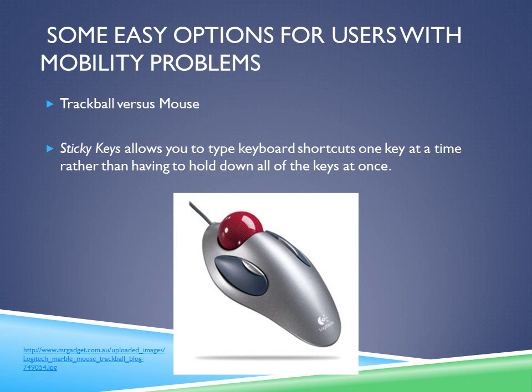Some easy options for users with mobility problems include the trackball versus the mouse. The trackball requires much less arm dexterity, resulting in less arm movement, which is really beneficial for people with mobility problems. Another solution is sticky keys, which allows you to type keyboard shortcuts one key at a time rather than holding down all the keys at once. This helps greatly by reducing movement. It is also very easy to enable and disable — just go into system settings, then universal settings, and enable or disable it there.